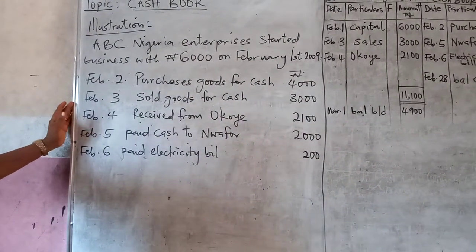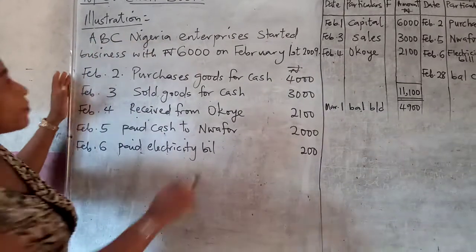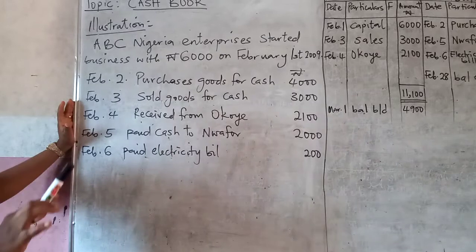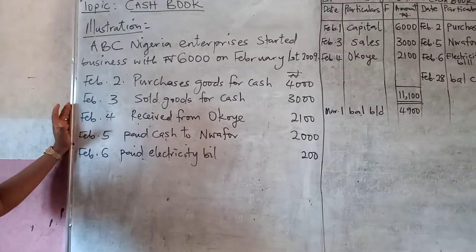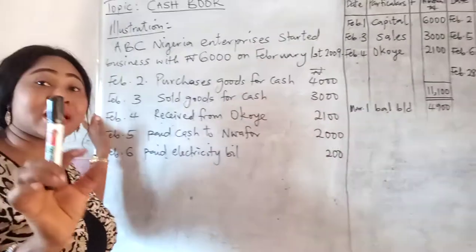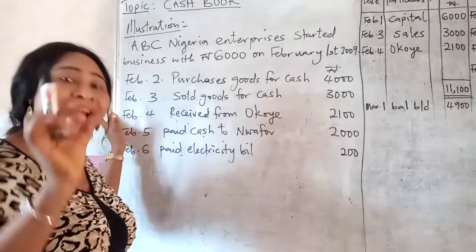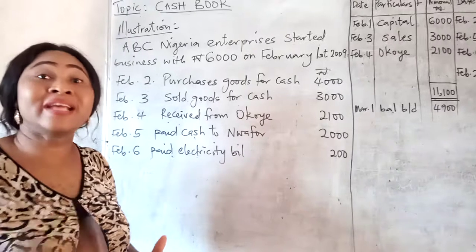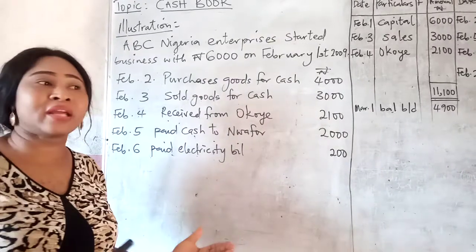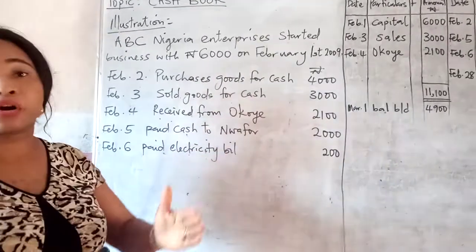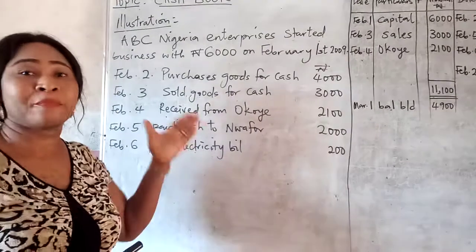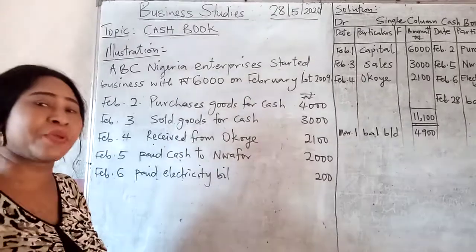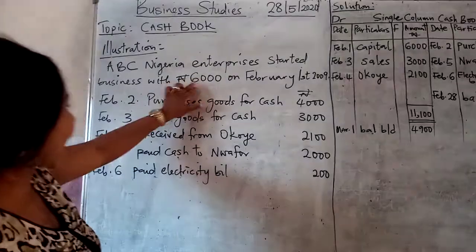A period of more months. ABC Nigeria Enterprises started business with 6,000 Naira on February 1st, 2009. Every money used in starting up a business is known as capital. But if it is the money at hand, it means that it is the money from the previous period, and that one should be known as balance brought down. But money used in starting up a business is known as capital.